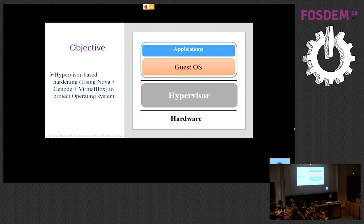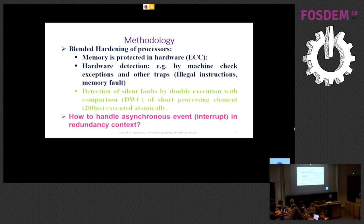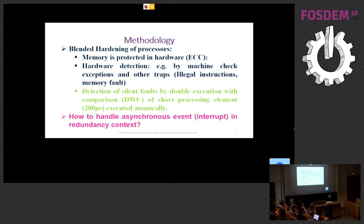The general approach is to rely on existing hardware detection and recovery mechanisms like machine check architecture, memory protection facilities, and error correcting codes. For errors which may remain undetected by hardware mechanisms, we rely on double execution with comparison of short processing elements which last at most 200 microseconds and are executed atomically. The challenge is handling the coherency of the system and the performance impact while executing redundantly in the presence of external interrupts, which are asynchronous events.